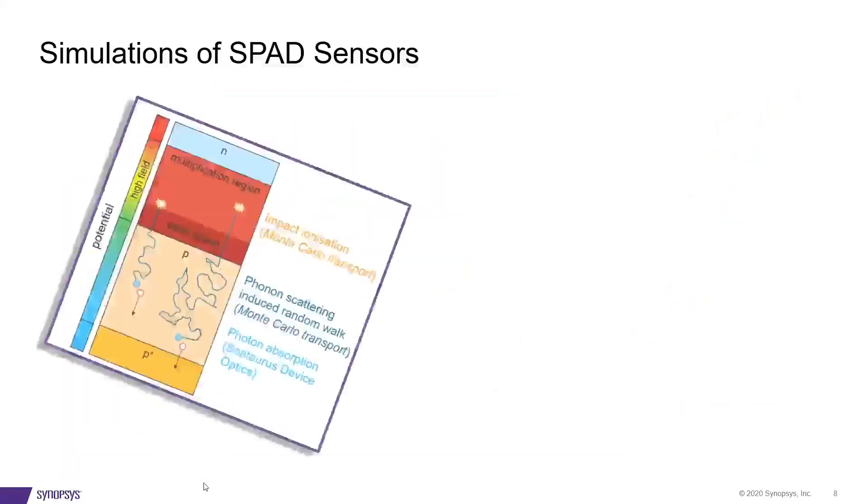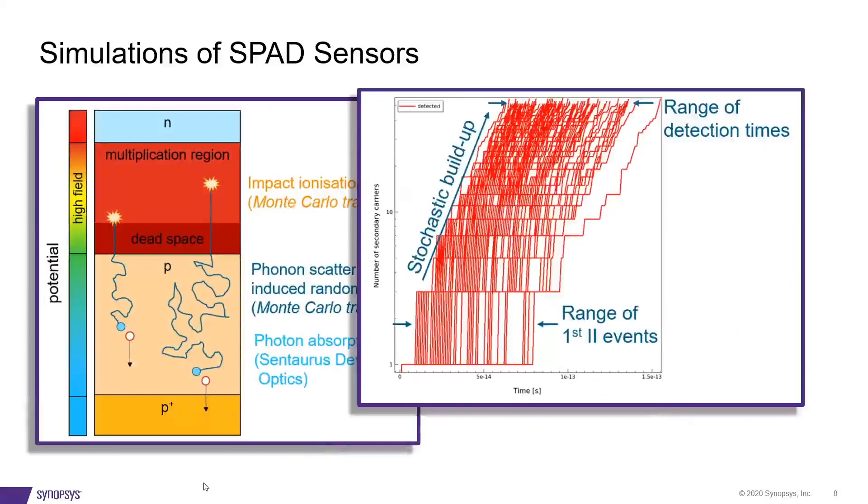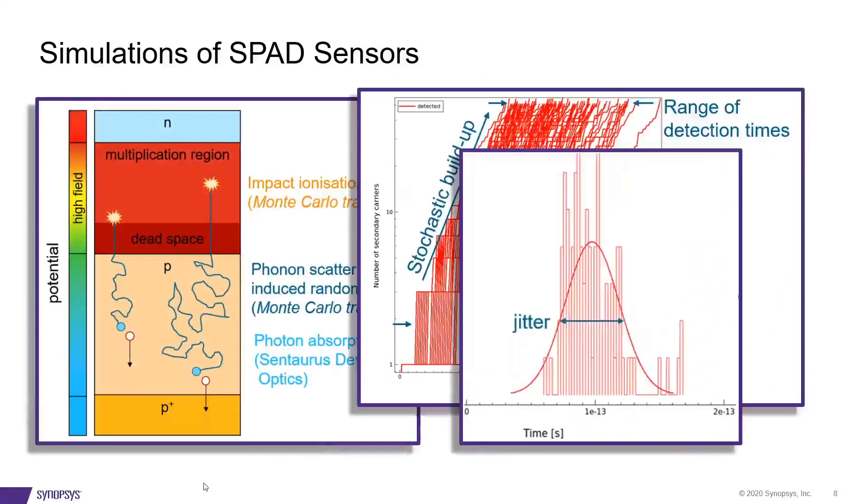Garant MC for single photon avalanche photodiodes. Evaluate how different SPAD design choices improve the temporal response or jitter of the SPAD.